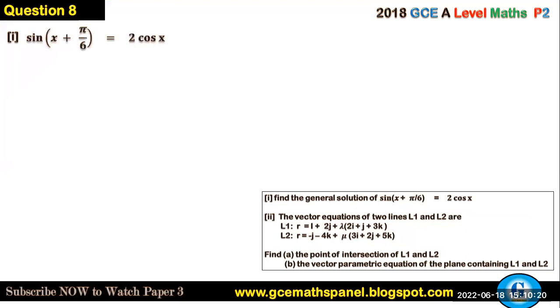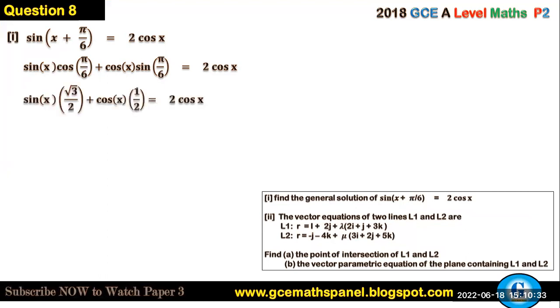So sin(x + π/6) will be sin x cos(π/6) + cos x sin(π/6), and that will equal 2cos x. But you know that cos(π/6) is equal to √3/2, while sin(π/6) is a half.